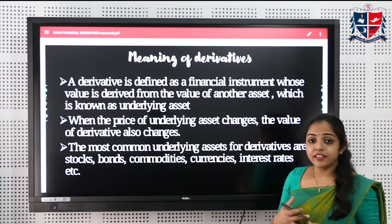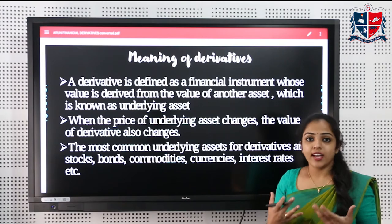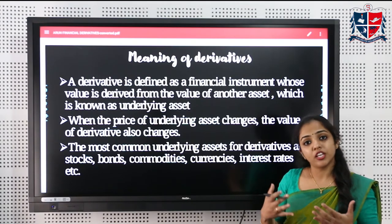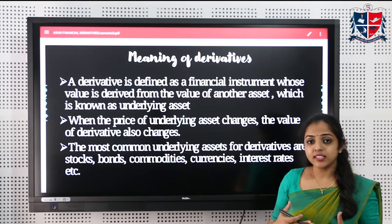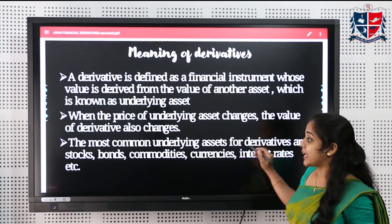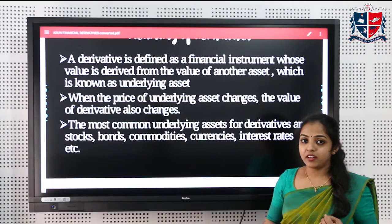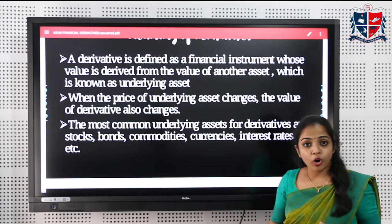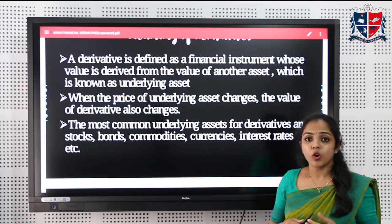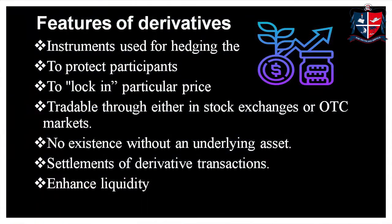Financial derivatives are a contract between a buyer and a seller, in which one party agrees to buy and another party agrees to sell an underlying asset at a predetermined price. The most commonly traded financial instruments include shares, debentures, bonds, currencies, and interest rates.